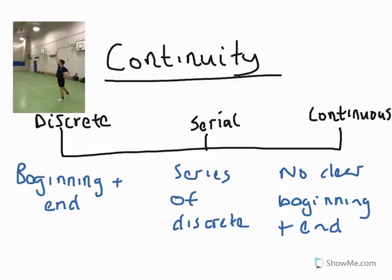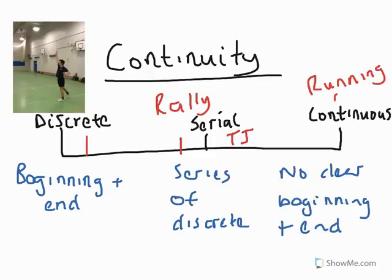For the overhead shot in badminton, isolated, we would consider it to be a discrete skill. However, if we talked about a rally, we might make that more serial: we serve, work our footwork back into centre court, play our overhead, move to net and play our drop shot, and so on. These are a series of discrete movements, so we could consider them serial. A classic example of a serial skill is the triple jump. A continuous skill is something like running, rowing, or cycling — you just keep turning those pedals, so there's no clear beginning and end.